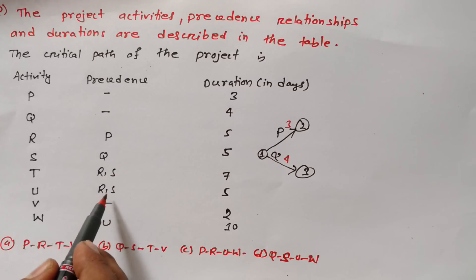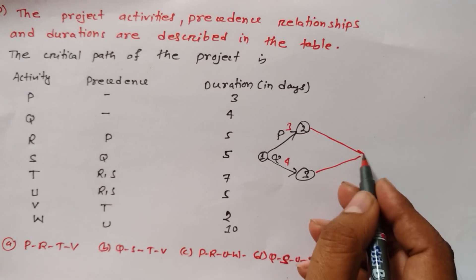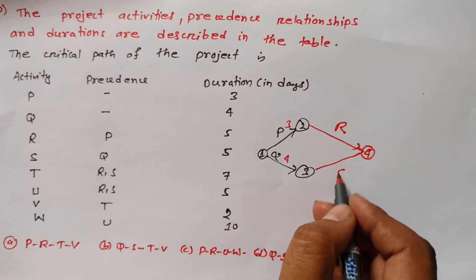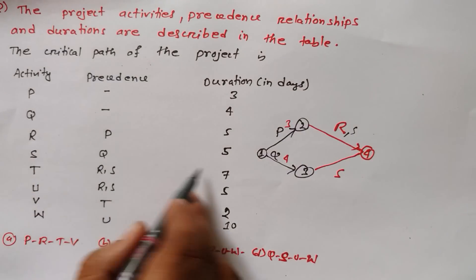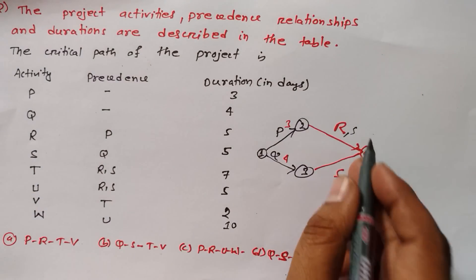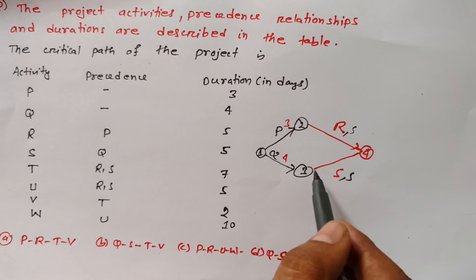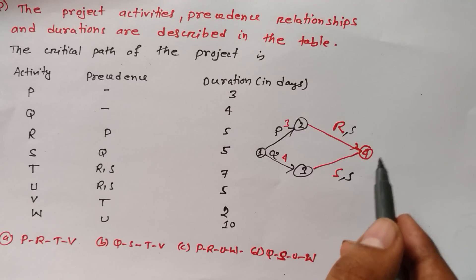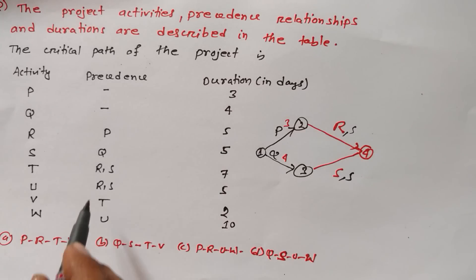R and S activity, both are together, that means both are going for only one point. Suppose this is R, this is S. R is taking five days, S is taking also five days. After looking at these, we have decided that both are going for only one point, precedence four, and both are merging there.